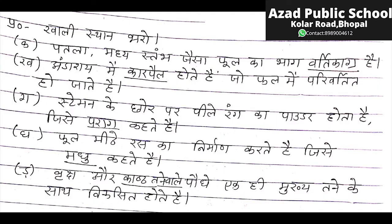Khali Isthan Bharo (Fill in the blanks). Patla, madhya, istambh jaisa phool ka bhaag varti kaagr kehlata hai — jo patla hota hai, beech mein hota hai, istambh jaisa phool ka ek hissah, usay hum varti kaagr kehete hai. Anndashay mein karpeel hote hai, jo phal mein parivartit ho jate hai. Salmon ke chhor par pilay rang ka powder hota hai, jisay paraag kehete hai.